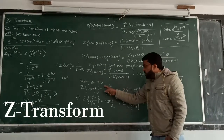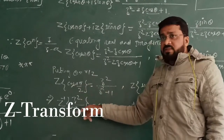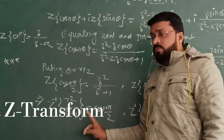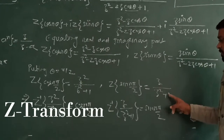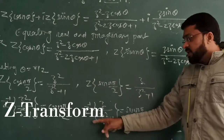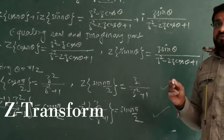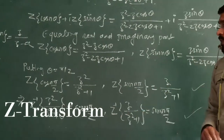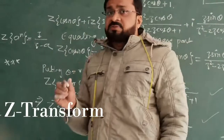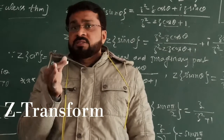Now the inverse: Z squared upon (Z squared plus 1) is nothing but cos(nπ/2). That is written as Z-inverse of Z squared upon (Z squared plus 1) equals cos(nπ/2). Similarly, Z-inverse of Z upon (Z squared plus 1) equals sin(nπ/2). These two formulas you can also remember before we solve the difference equation, then we will apply this formula. This is the way of finding Z-transformation of sin(nθ) and cos(nθ), and the particular case Z-transformation of sin(nπ/2) and cos(nπ/2). Thanks. Goodbye.